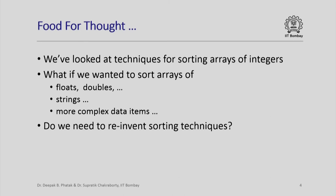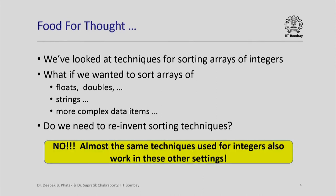So here is some food for thought. We have looked at techniques for sorting arrays of integers, but what if we wanted to sort arrays of other data types like floats, doubles, strings, or more complex data items? As you might have already guessed, the technique used for sorting arrays of integers should work almost unchanged for sorting arrays of floats and doubles. But would it work for sorting arrays of strings and more complex data items? Do we need to reinvent sorting techniques based on the data types in our arrays? Fortunately, the answer is no — almost the same techniques we have studied for sorting integers will also work in these other settings.